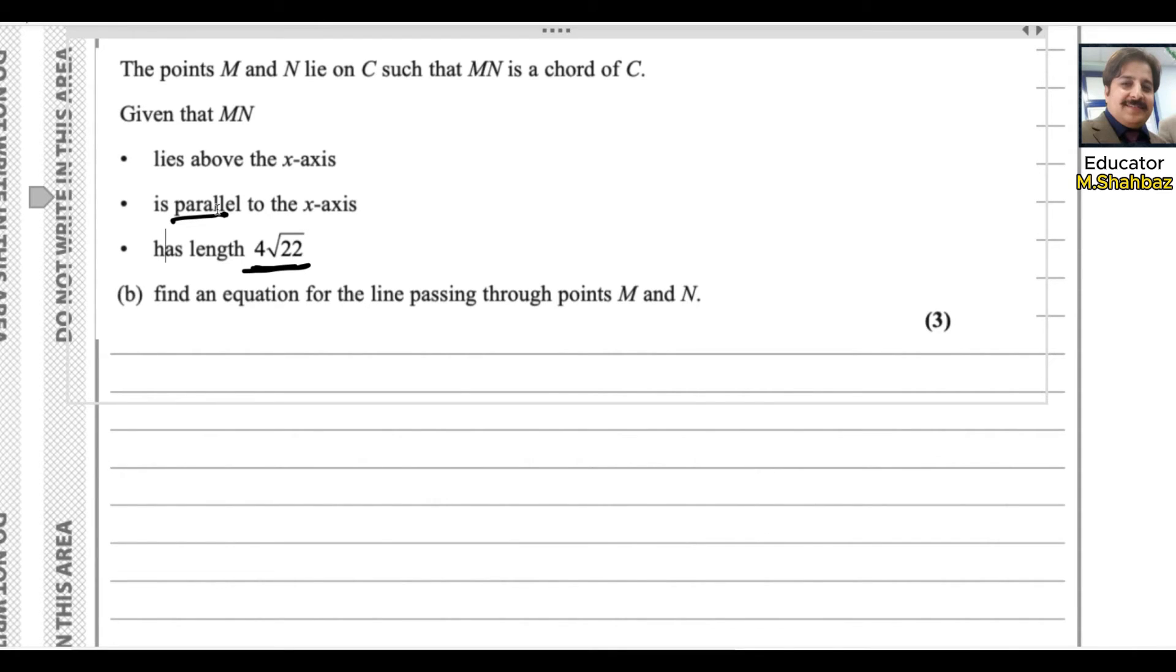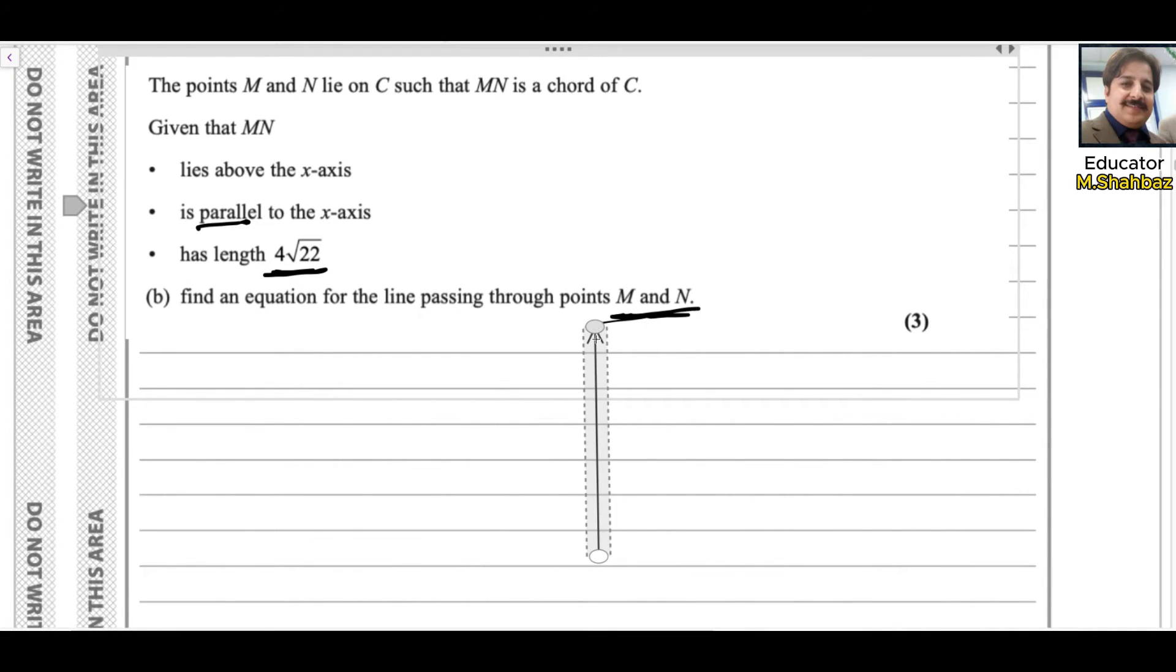Let me sketch the diagram so it will help you find the equation of the line passing through M and N. This is the y-axis and x-axis. Circle has center (3,5), so it will be somewhere here. I am not drafting the diagram, I am just sketching it.